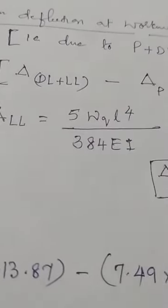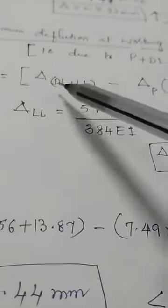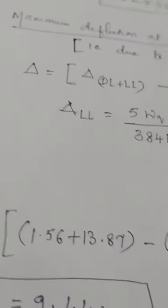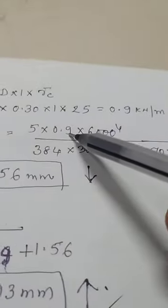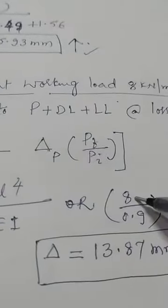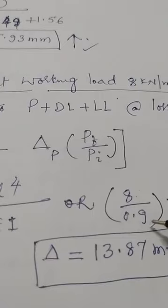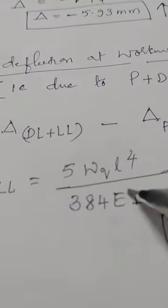Dead load deflection is 1.56 mm and live load deflection is calculated proportionally: for a dead load of 0.9 kN/m (approximately), the deflection is 1.56 mm; for 8 kN/m live load, calculate accordingly. Both dead and live load deflections are added as downward. The prestress deflection of −7.49 mm (due to M and Wc) is also substituted.